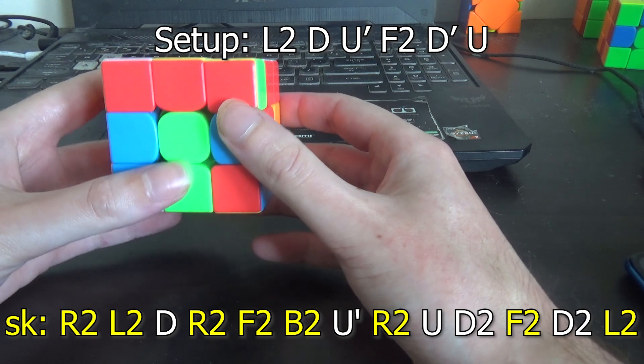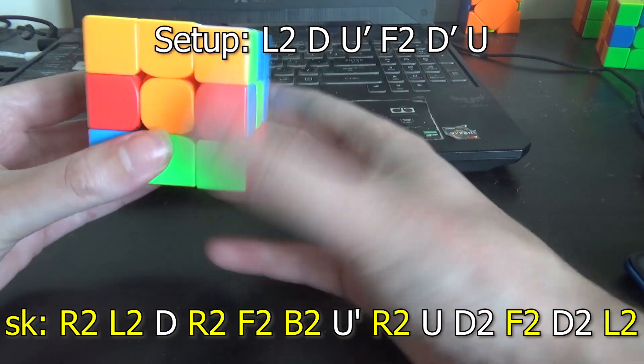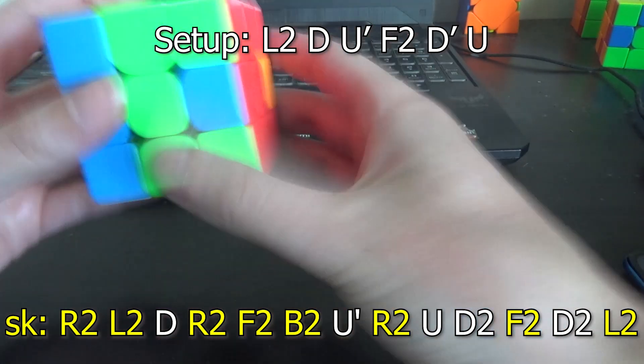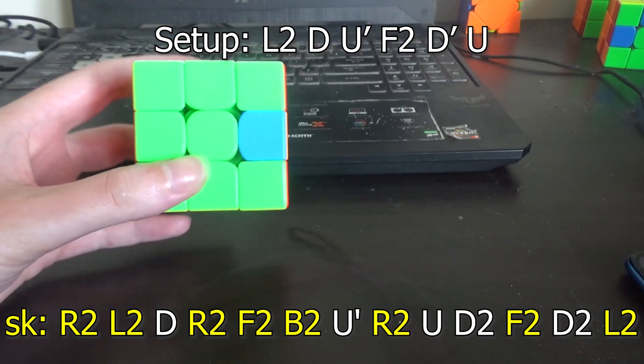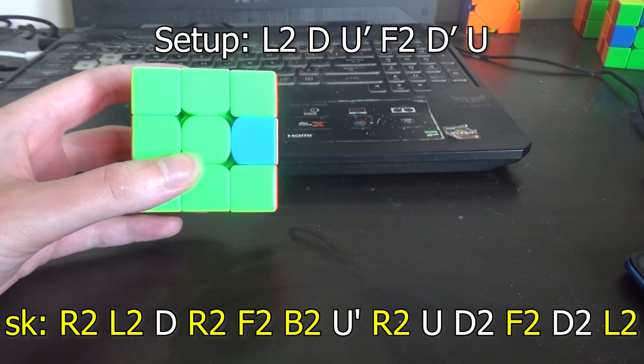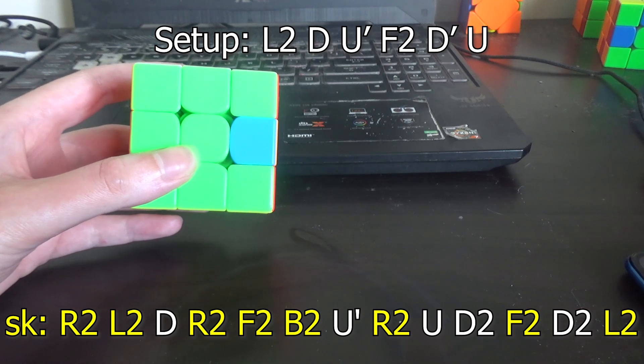And that doesn't work. Or we could try widening this U prime and the U. And that doesn't work. So the only thing left to try is widening the D, the U prime, and this D2.